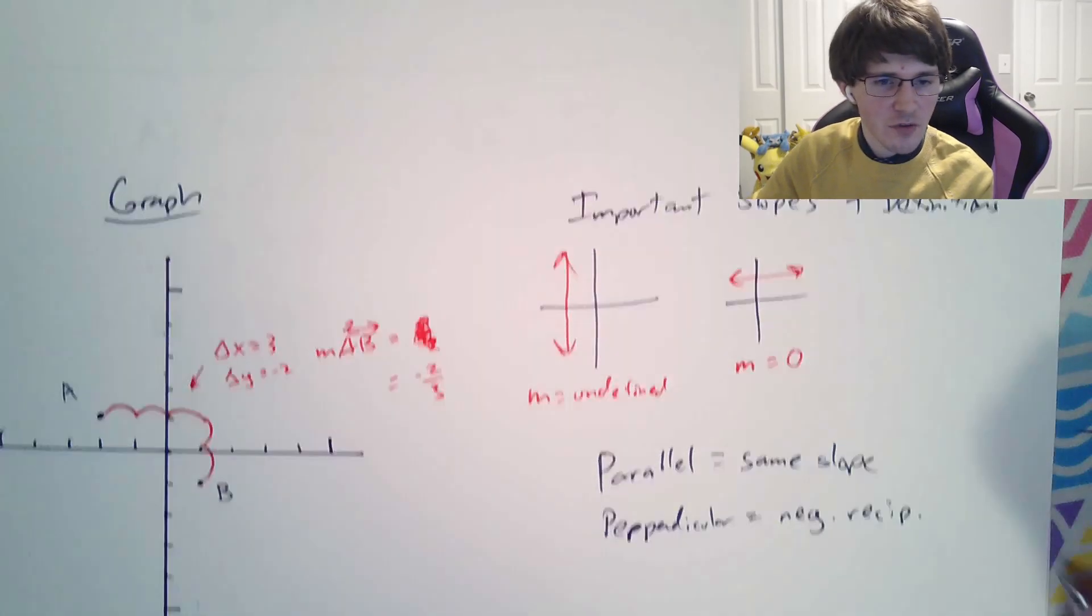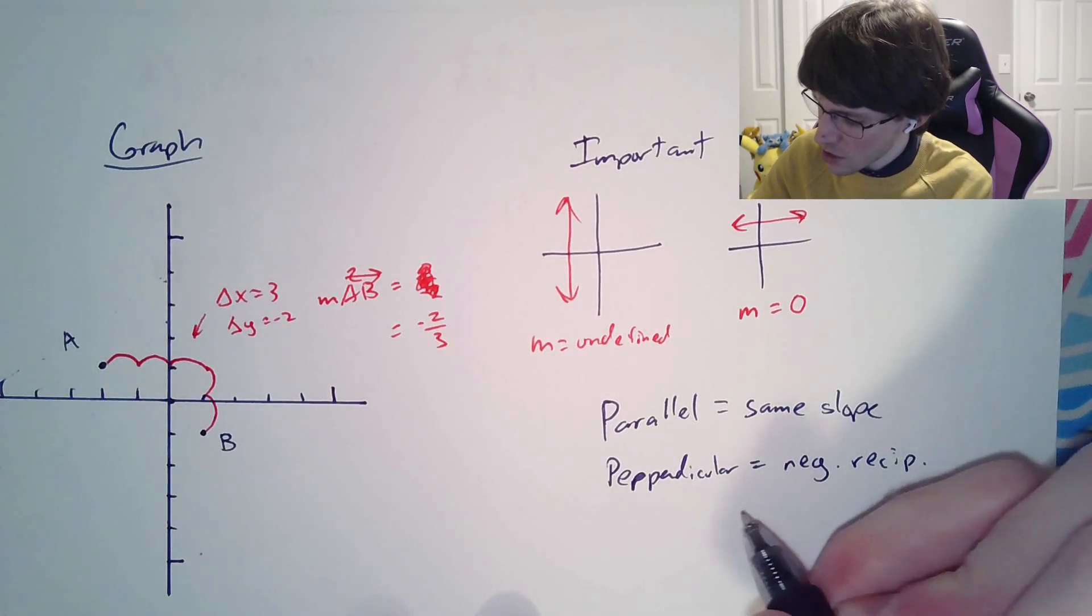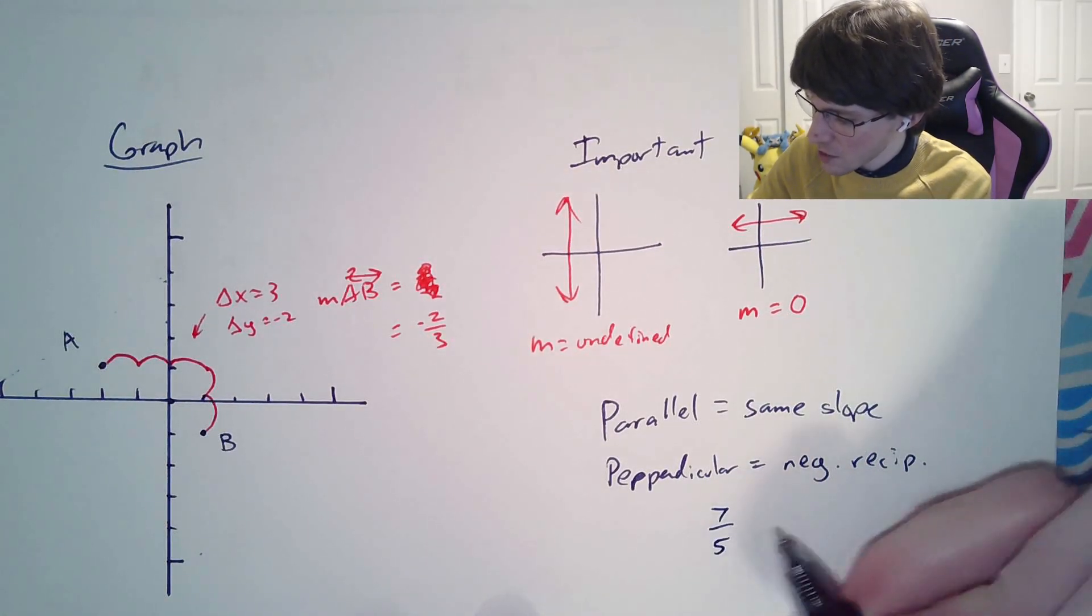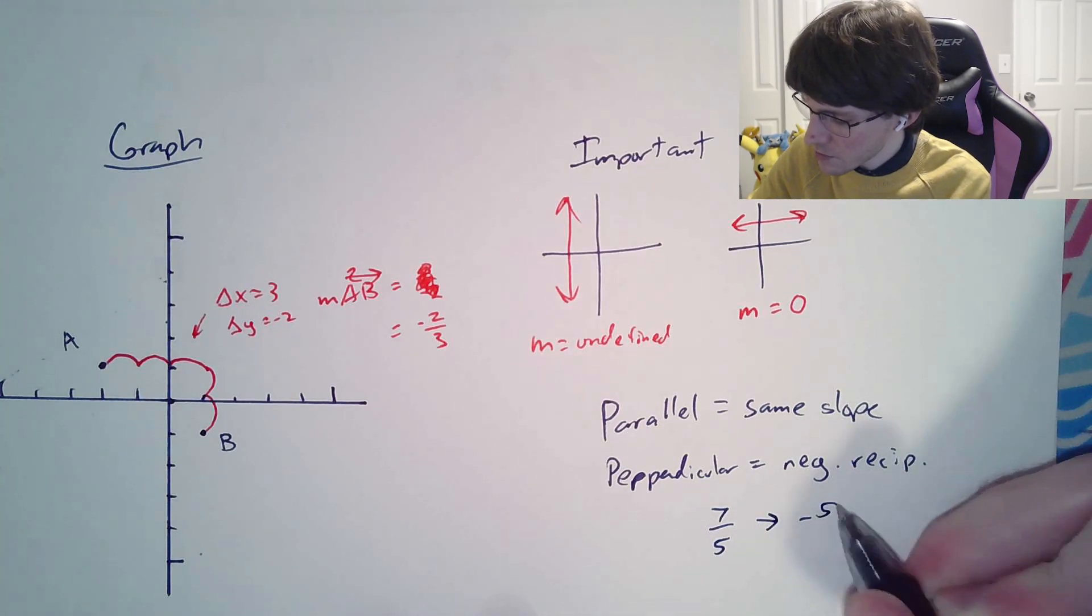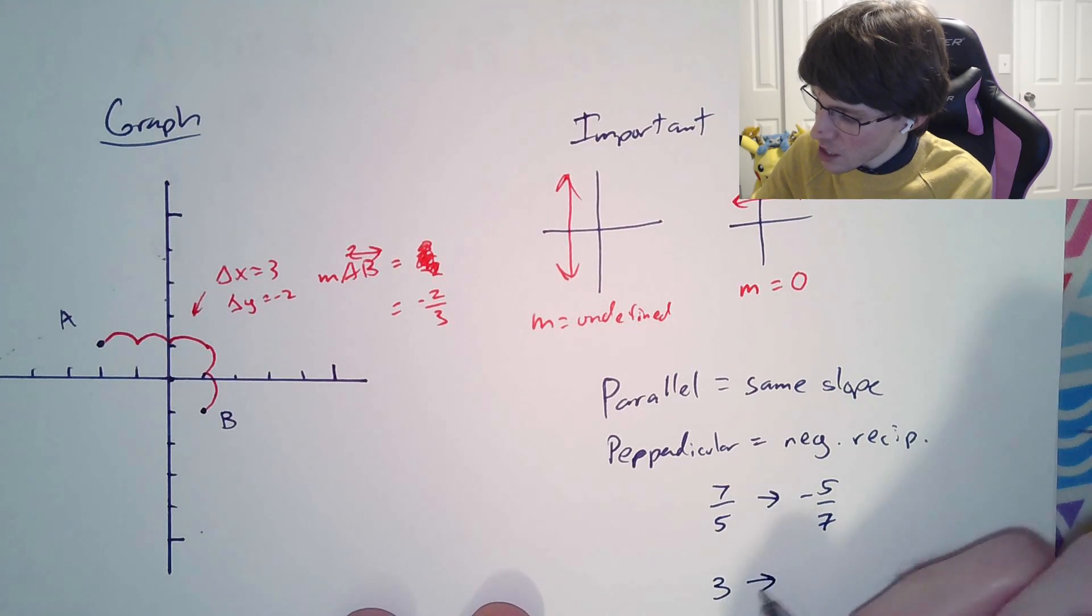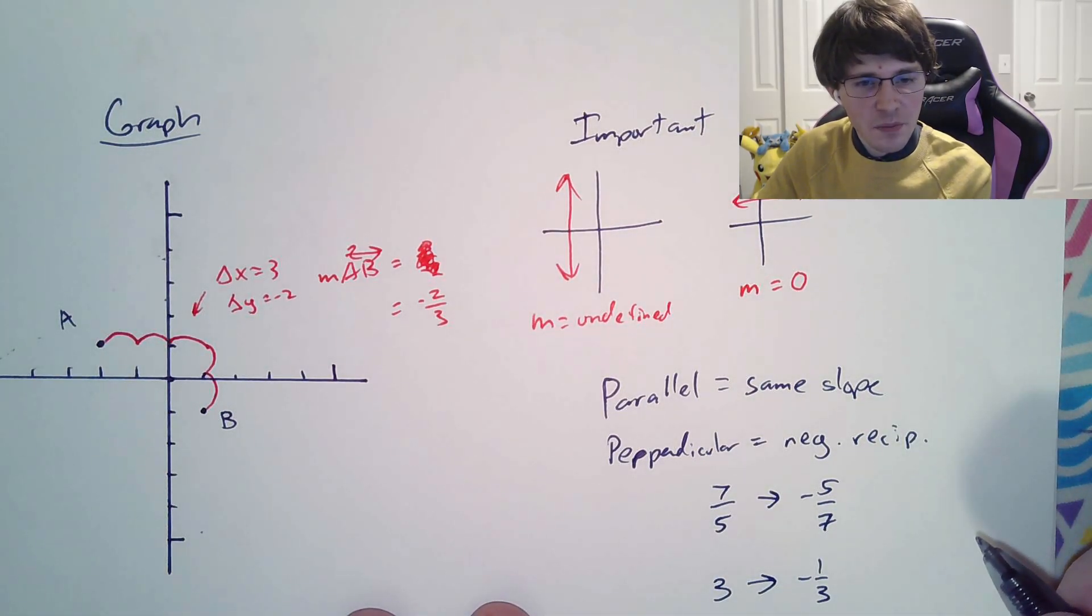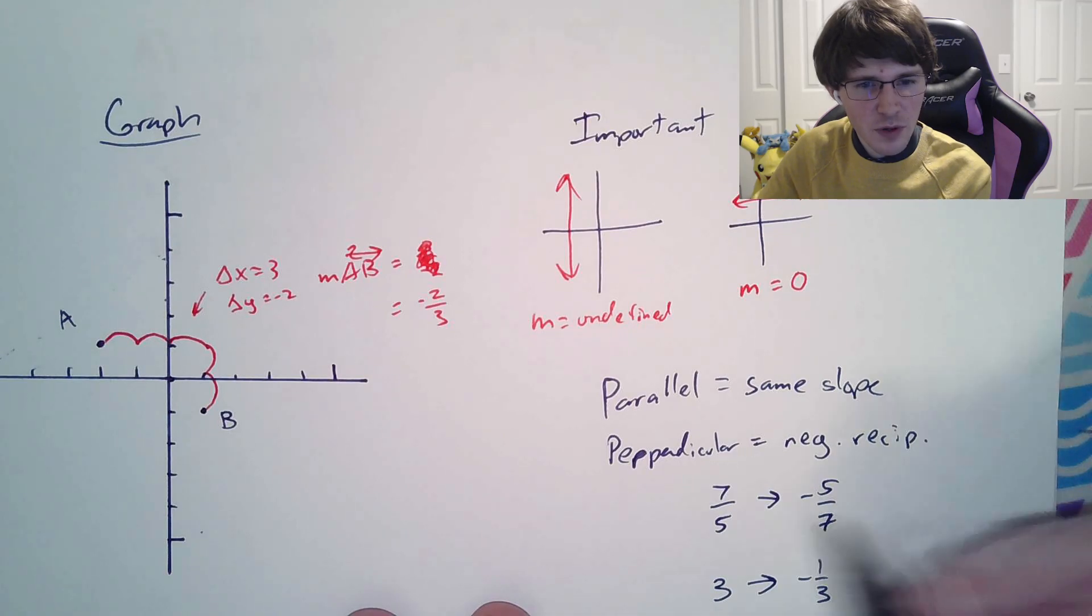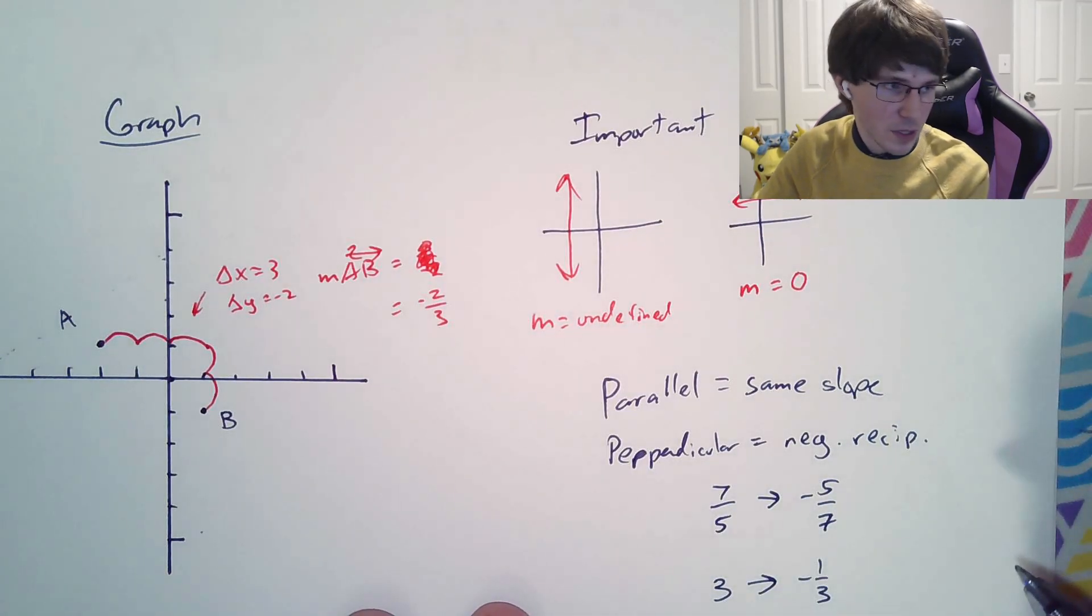When you say a negative reciprocal, what you're talking about is if I have a number like 7 over 5, the negative reciprocal is negative 5 over 7. And if I have a whole number like 3, the negative reciprocal would be negative 1/3. That's pretty much it for negative reciprocals. Slopes like this would be perpendicular.